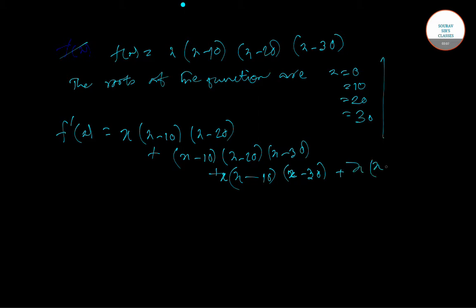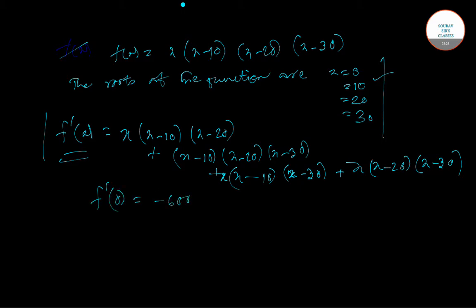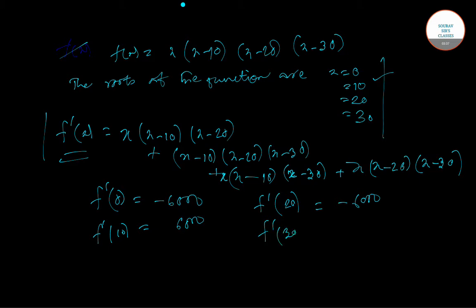This is the differentiated function. We have to check the value at all these points. At x = 0 it will be minus 6000, at x = 10 it will be plus 6000, at x = 20 it will be minus 6000 again, and at x = 30 it will be plus 6000 again.